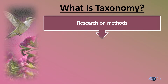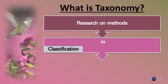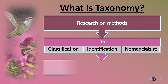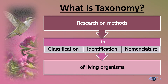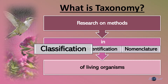Taxonomy is a research method on how to classify, identify, as well as give nomenclature to all living organisms. From the definition of taxonomy, there are a number of keywords that we need to understand better, such as classification, identification, and nomenclature. Let me start off with classification.